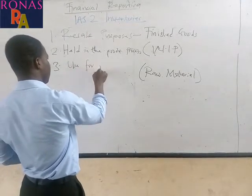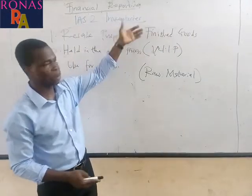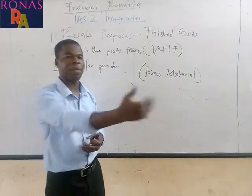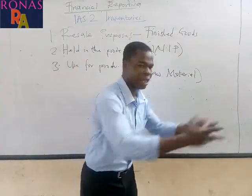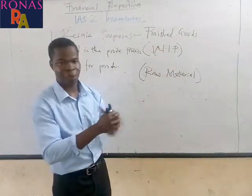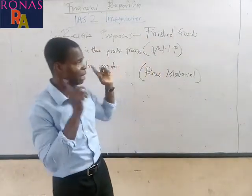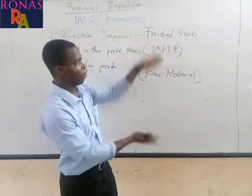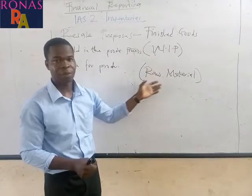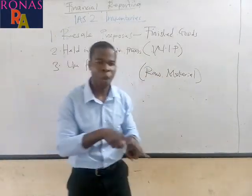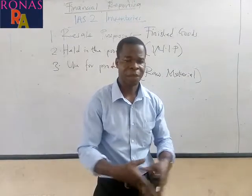So IAS 2 Inventories defines inventories as assets held for retail or resale purposes, assets held in the production process (work in progress), or assets bought for production purposes (raw materials). These three categories come together to form what we call inventories. They are expected to remain within the business for no more than one accounting period.